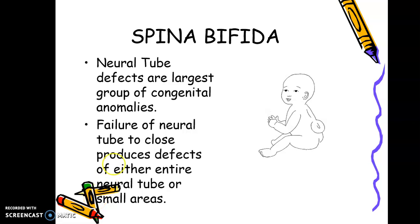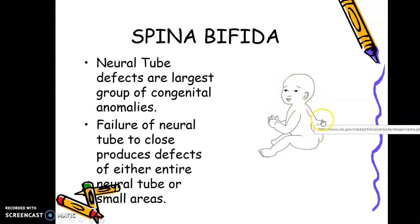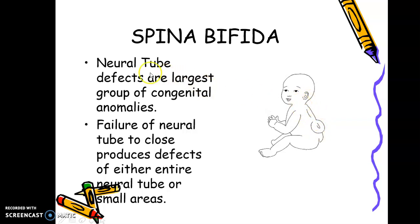Good morning dear students. Today we are starting a new topic: spina bifida. You can see in the figure a child sitting with something bulging posteriorly from the spine. This condition affects the spinal cord, which we call the neural tube.